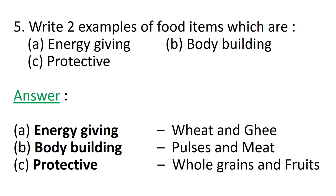Question number 5: Write two examples of food items for each category. Energy giving food items are wheat and ghee, because energy giving food includes both carbohydrate as well as fat rich food items. Body building food items are pulses and meat. Protective food items include whole grains and fruits, which have a good amount of vitamins and minerals.